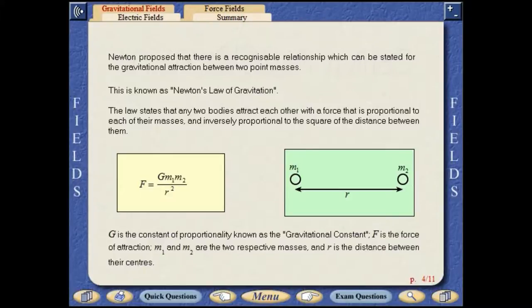The law states that any two bodies attract each other with a force that is proportional to each of their masses, and inversely proportional to the square of the distance between them.